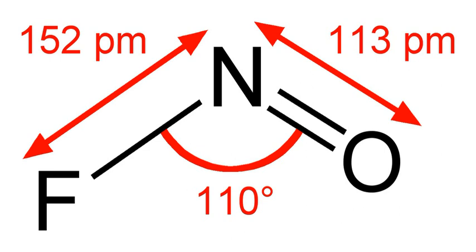ROH plus NOF to RONO plus HF. It has a bent molecular shape. This can be rationalized in the VSEPR model in terms of the lone pair of electrons located on the nitrogen atom.